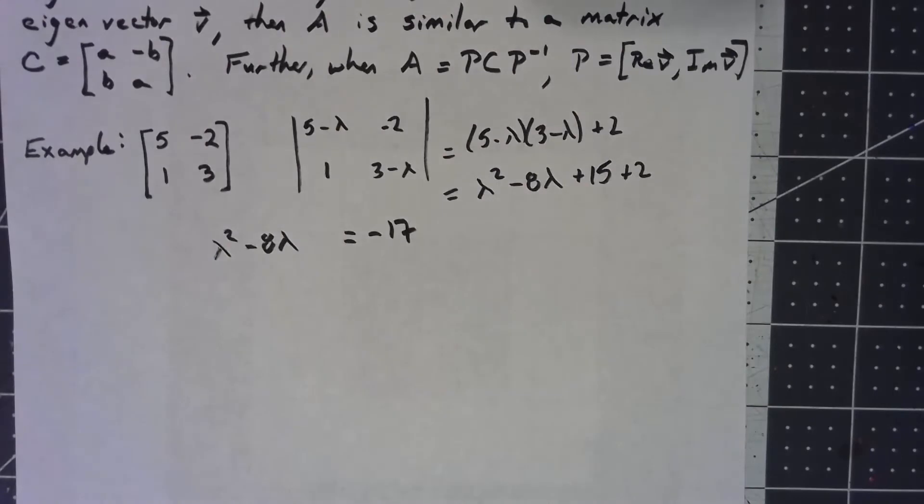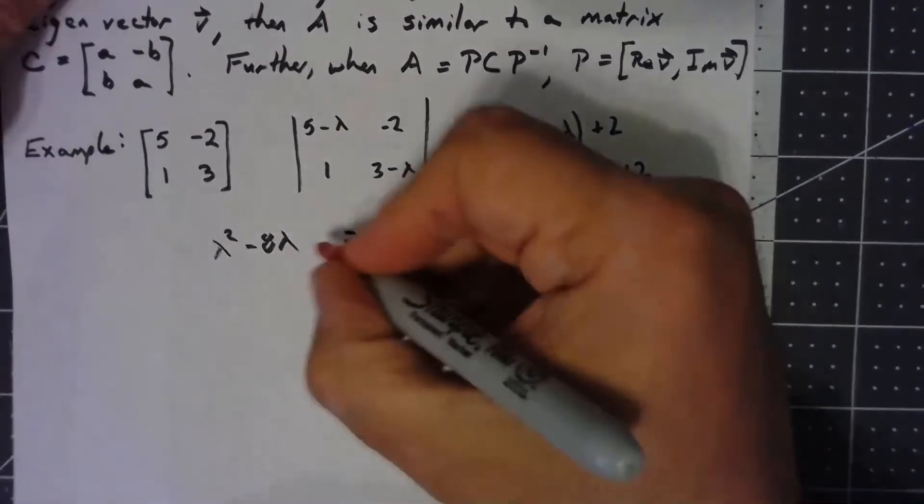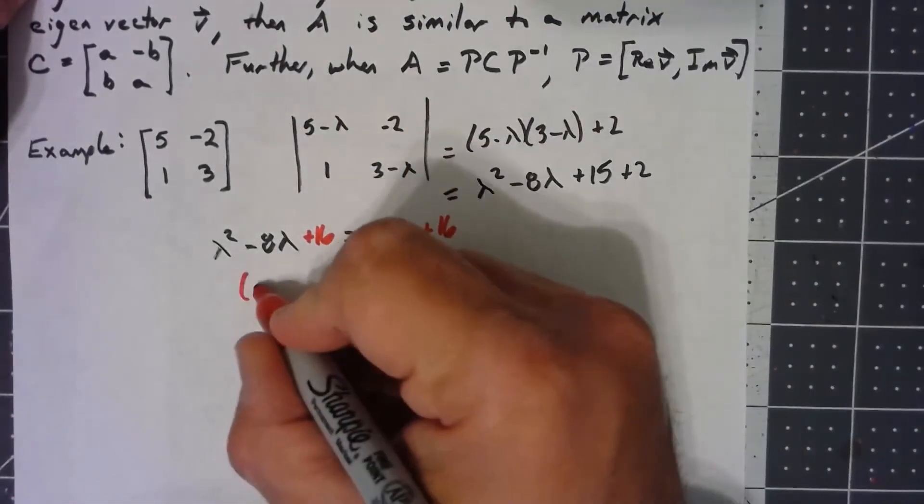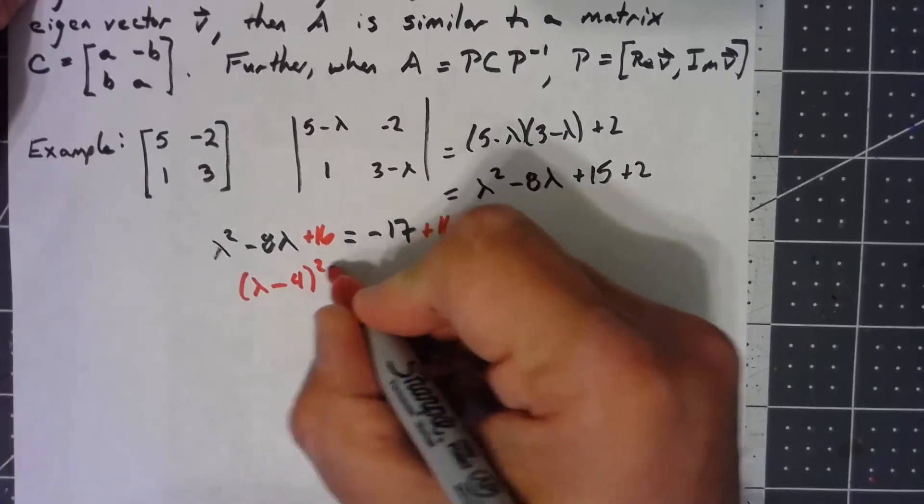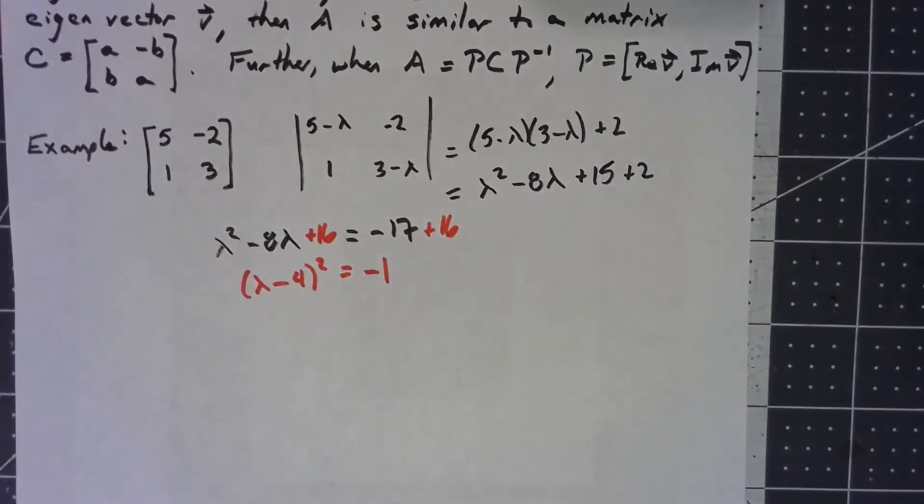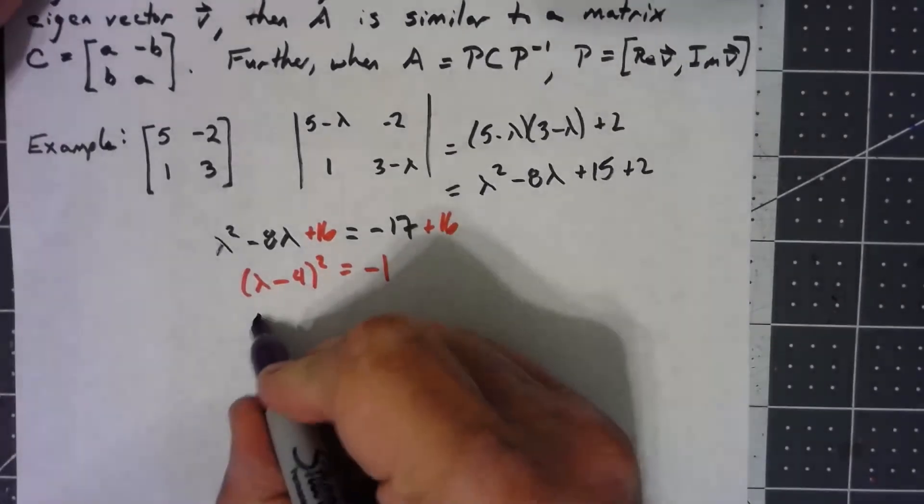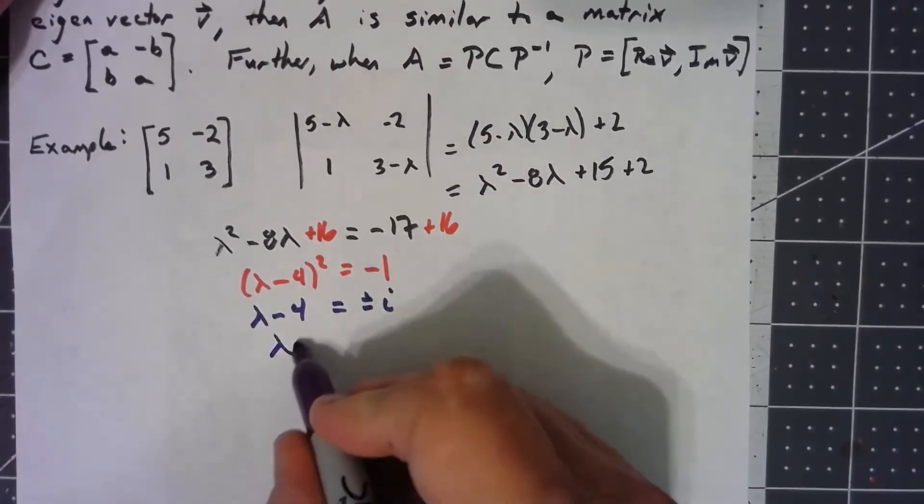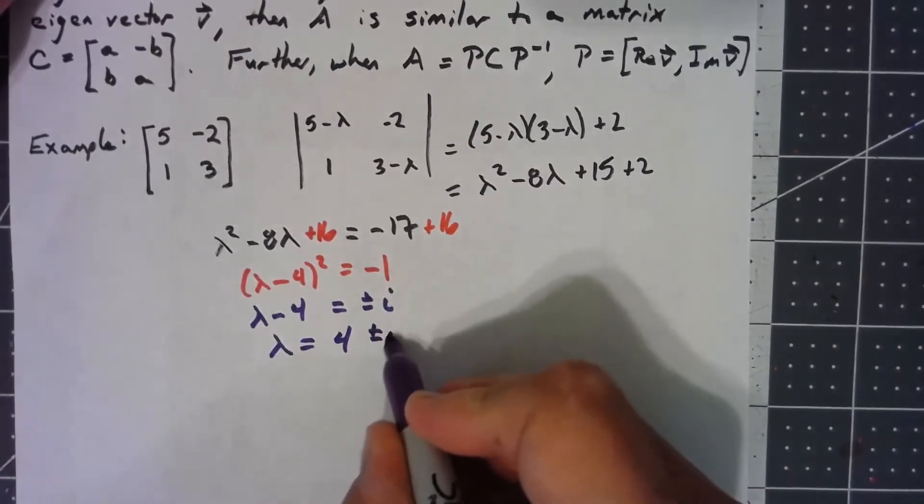I can complete the square by adding 16 to both sides. So (λ - 4)² is equal to -1, which means that λ - 4 is plus or minus i, so λ is equal to 4 ± i.